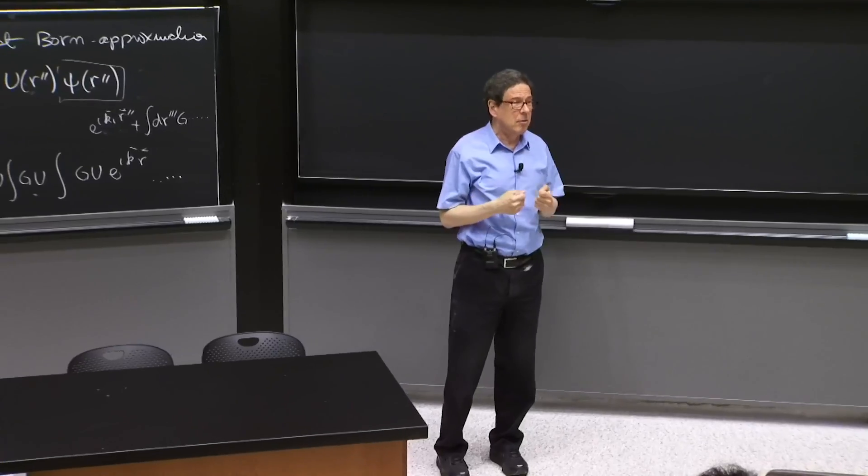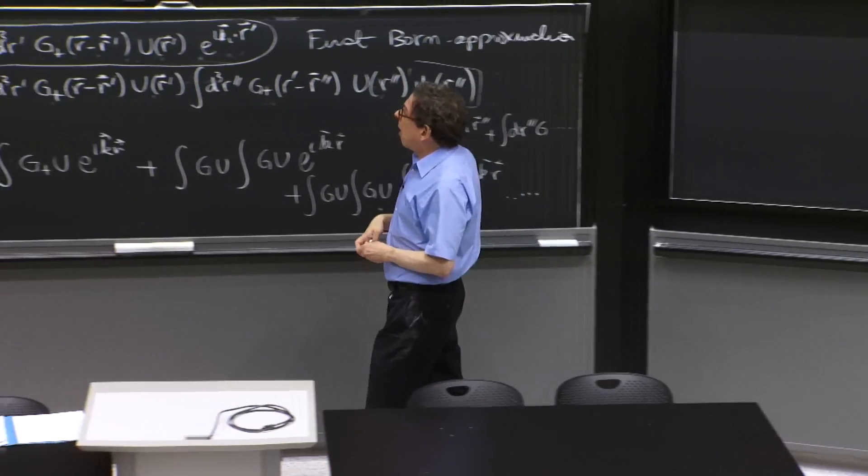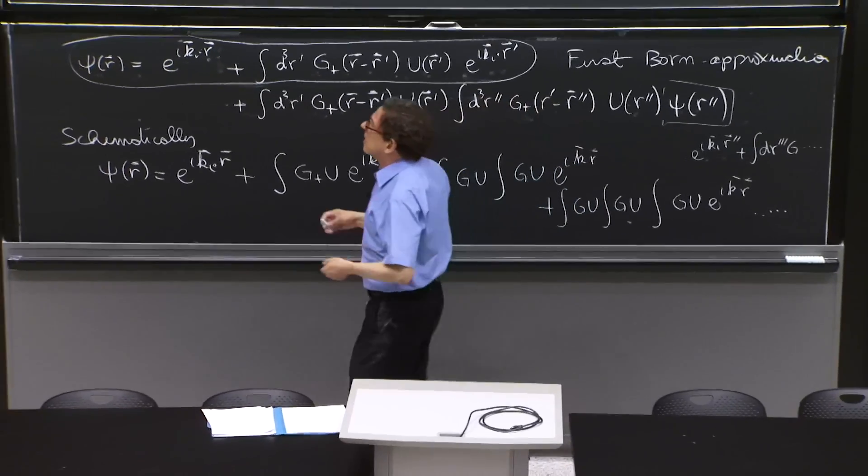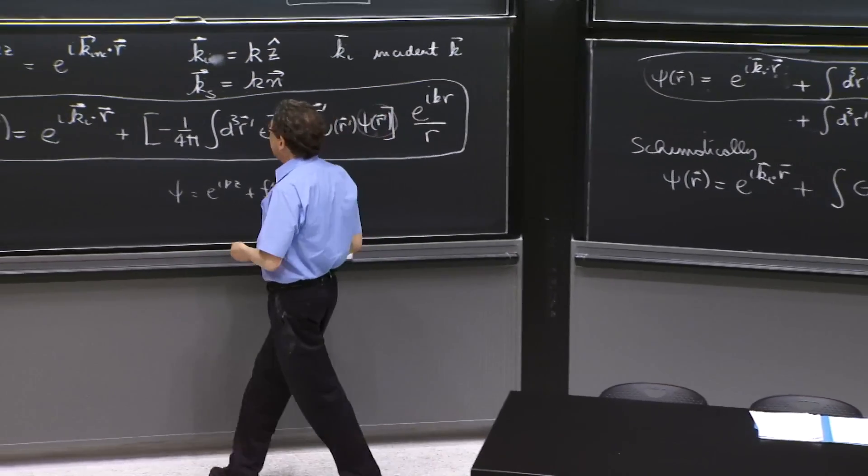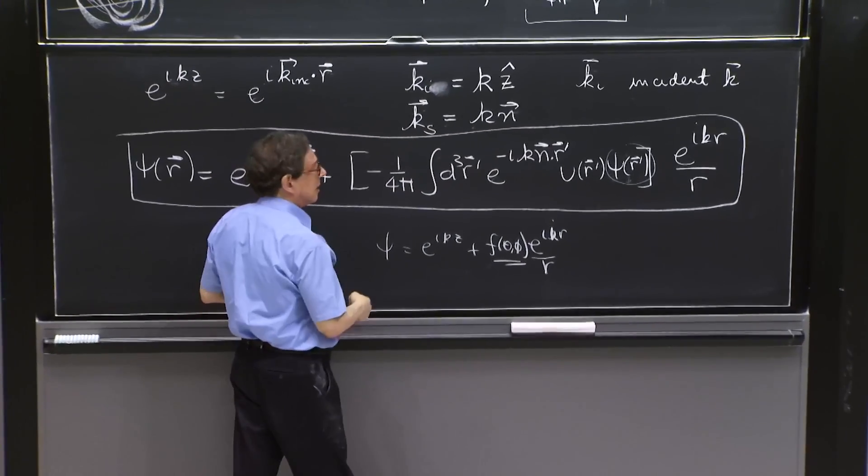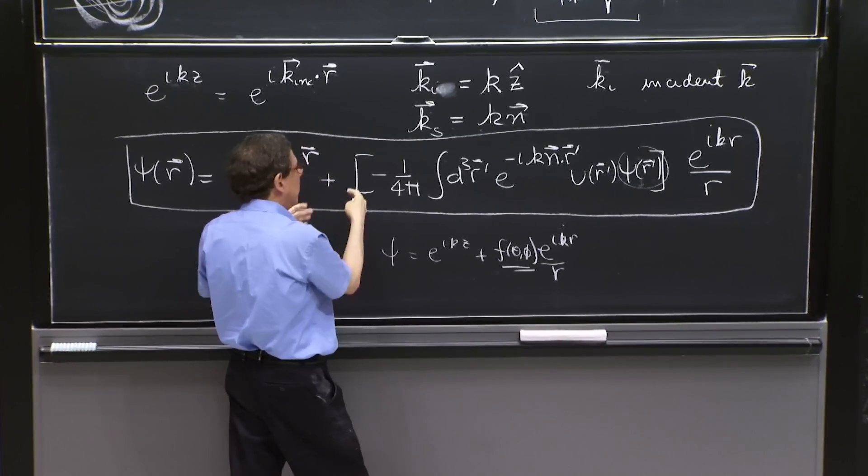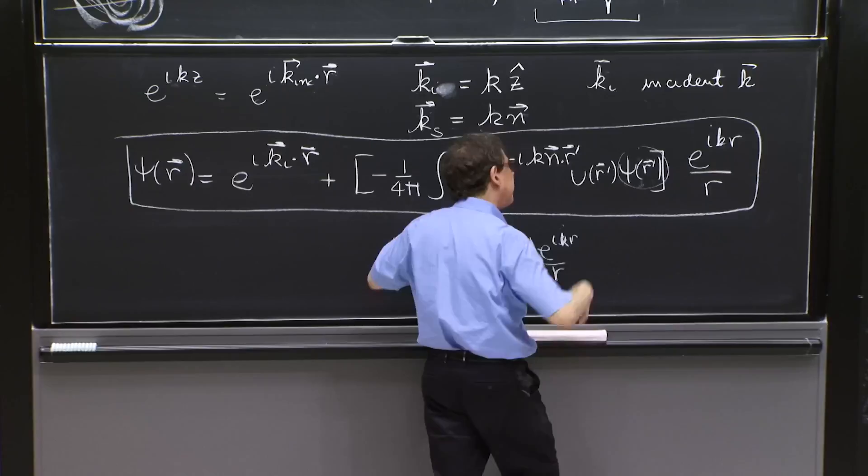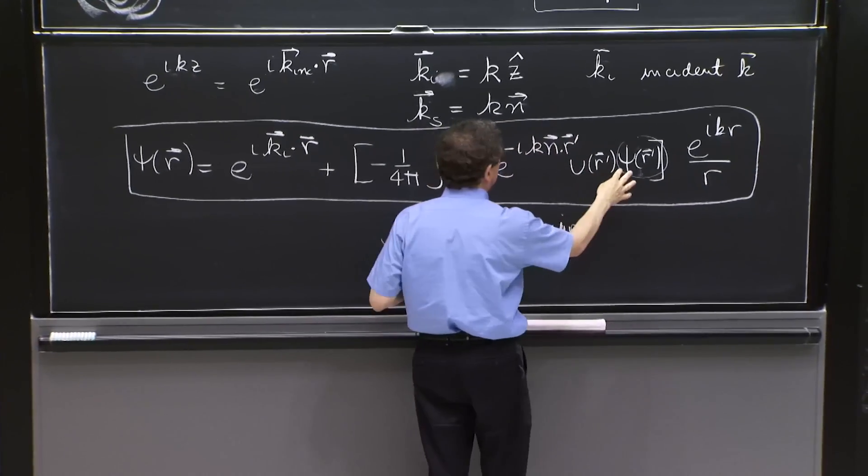the born approximation should be very good. It's a high energy approximation, in which you are basically saying that inside the integral, you can replace the plain incident wave, because that dominates. That's not the whole solution. The whole solution then becomes a plain integral wave plus a scattered wave. But the plain wave dominates over the scattering process.